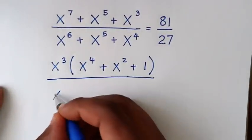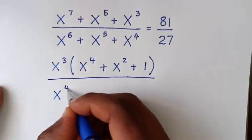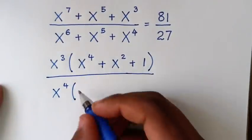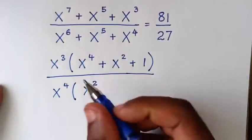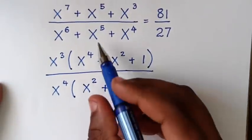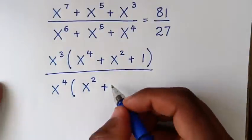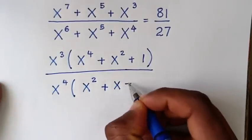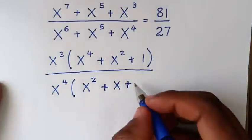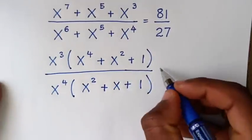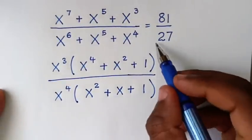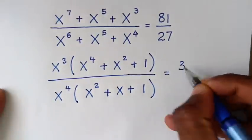In the denominator, x⁴ is the smallest exponent, so it is common. We take x⁴ out of the bracket: x⁶ divided by x⁴ is x² (since 6 minus 4 is 2), plus x⁵ divided by x⁴ is x, plus x⁴ divided by x⁴ is 1. The right-hand side 81 divided by 27 equals 3.